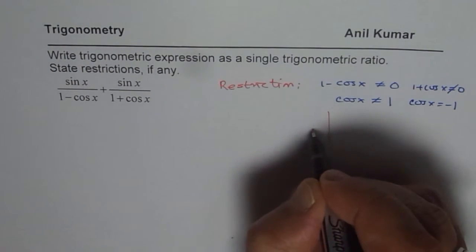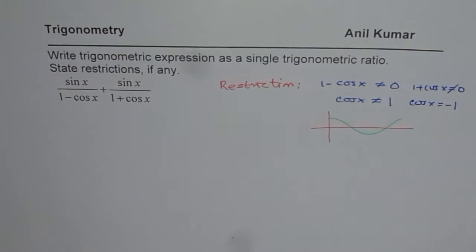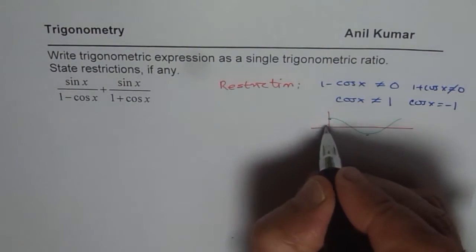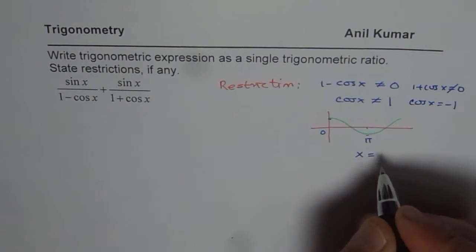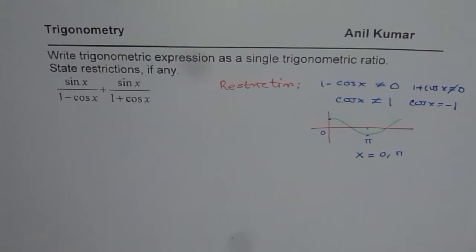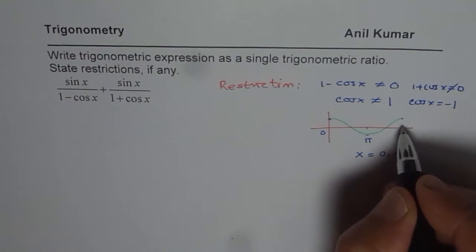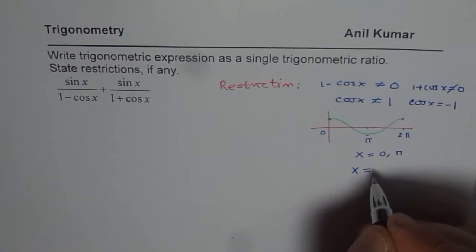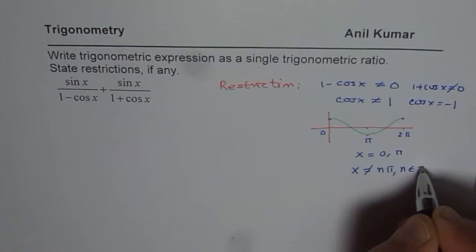When is cos x equal to plus 1 or minus 1? If you draw the cosine function graph, cos x is plus 1 or minus 1 at 0 and at pi. So the restriction is that x is not equal to 0 or pi, if you are working in the domain 0 to 2 pi. If we need to write this as a general expression, we could write x is not equal to n pi, where n belongs to integers.